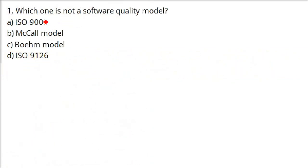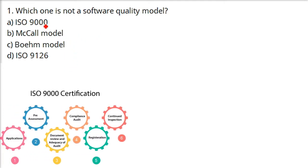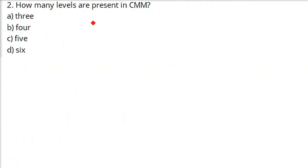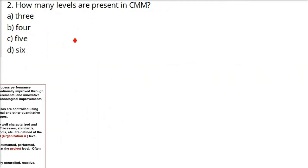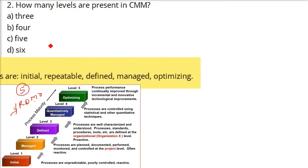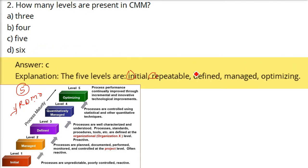Which one is not a software quality model? ISO 9000 is a certification - if your organization follows the processes it has defined, it can be ISO 9000 compliant. How many levels are present in CMM? There are five levels. Whichever level your organization or institution achieves, that is where you stand. The five levels of CMMI are: Initial, Repeatable, Defined, Managed, and Optimized.